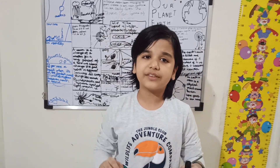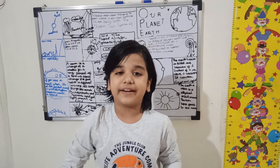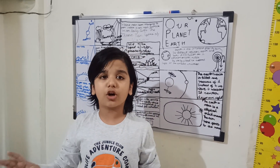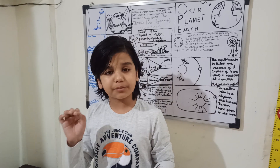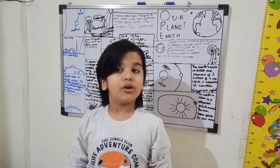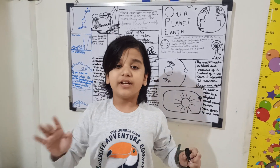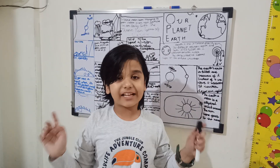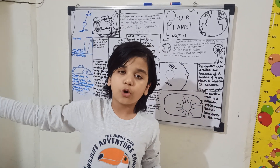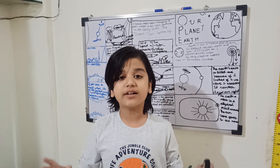Evaporation happens when the sun gives heat to the surface of the water and it rises up in the air. Some dust particles and water particles in the sky join to form clouds — this is called condensation. Now, when clouds become grey, it is because they can't hold enough water, so they fall down as rain — this is called precipitation. When rivers flow to the oceans, the rain gets collected there and it goes back to the oceans. This is called the water cycle.